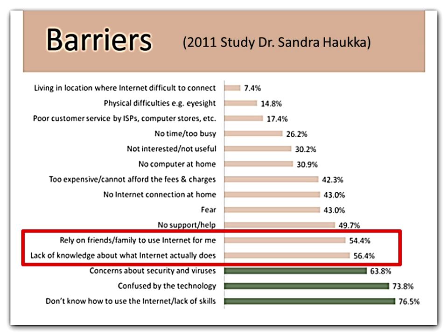In 2011, Dr. Sandra Harker did a study under the Australian Research Council on barriers for older people wanting to learn the internet. The big finding was that people were relying on friends and family to use the internet for them, or had a lack of knowledge about what the internet actually does. Most seniors grew up where a light switch simply turned the light on and off, and they struggle with things that change on screen. They're concerned about security, viruses, and are generally confused by the technology. The number one reason is they don't know how to use it — lack of skills.